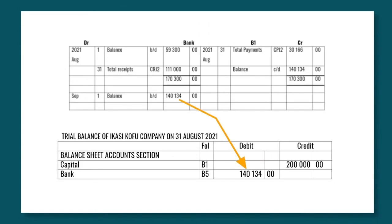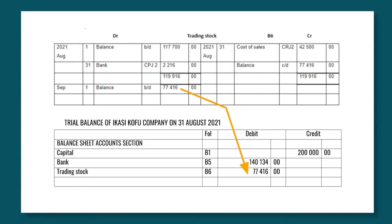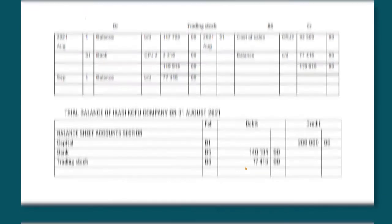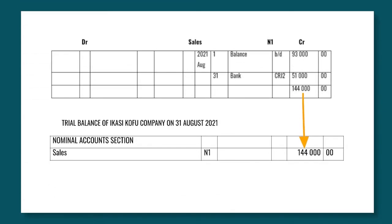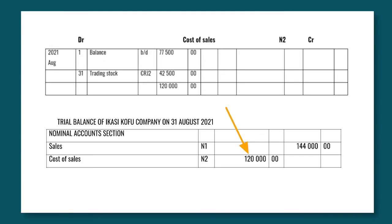The second account is the bank account — this balance will be posted on the debit side. The third account is the trading stock account — this balance will also be posted on the debit side. Next up is sales, which is in the nominal account section and will be on the credit side, as incomes increase on the credit side. The next account is the cost of sales, which will be posted on the debit side as it is an expense.